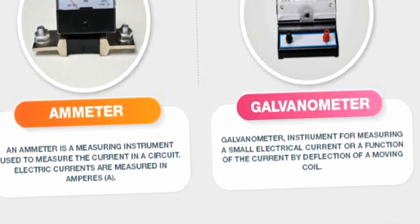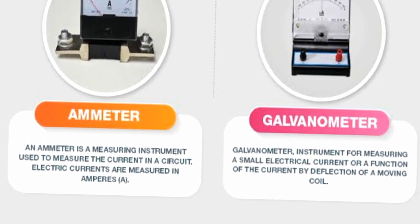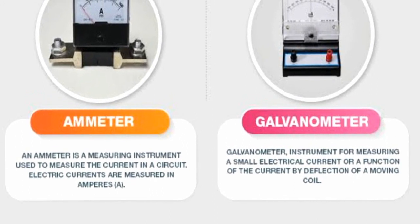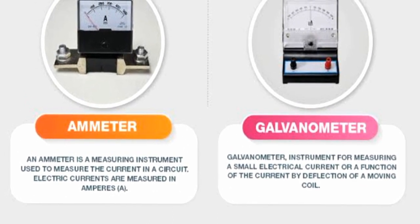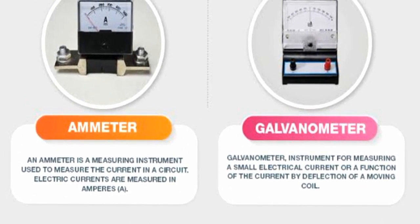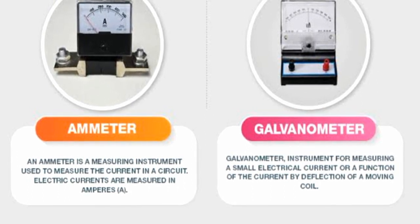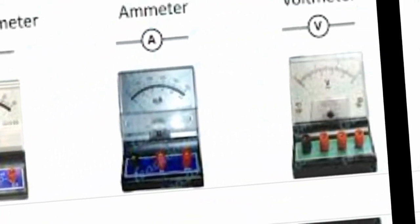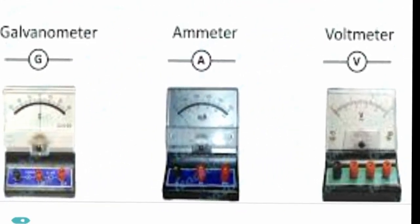You can also see the picture of the galvanometer and the basic difference between their pictures. The ammeter is a measuring instrument used to measure the current in a circuit, and electric currents are measured in amperes. The galvanometer is the instrument which is used for measuring a small electric current or a function of the current by deflection or by moving a coil.